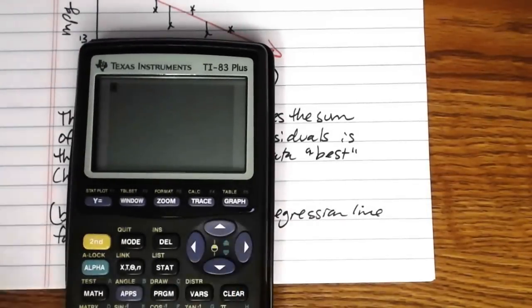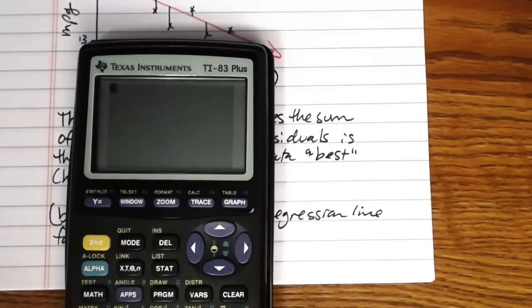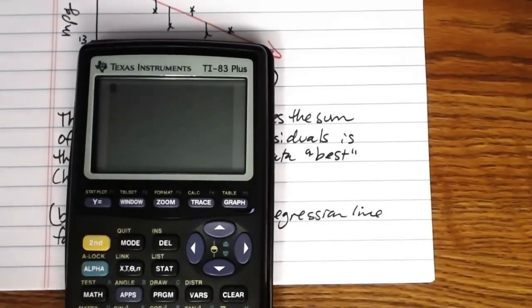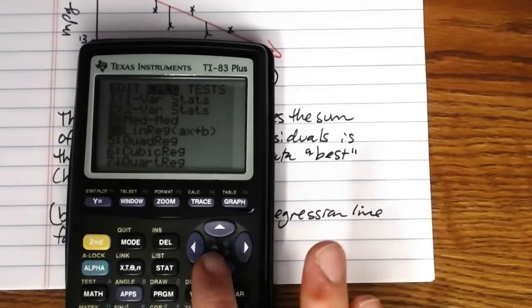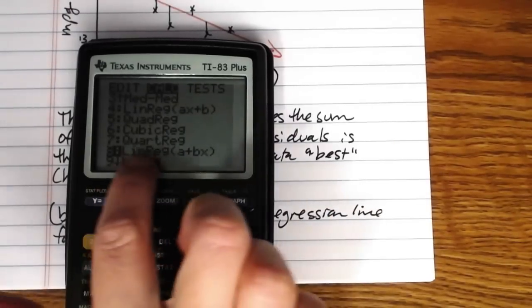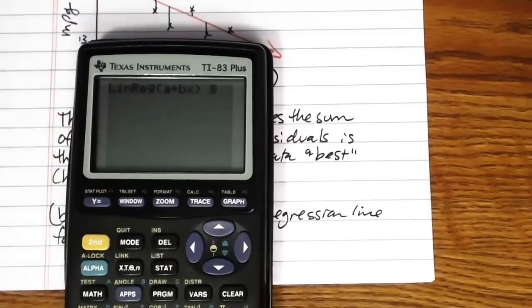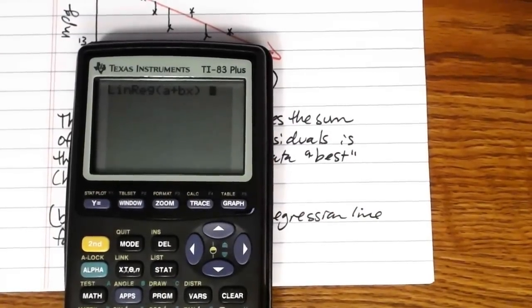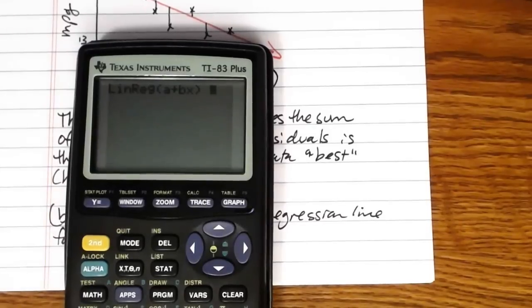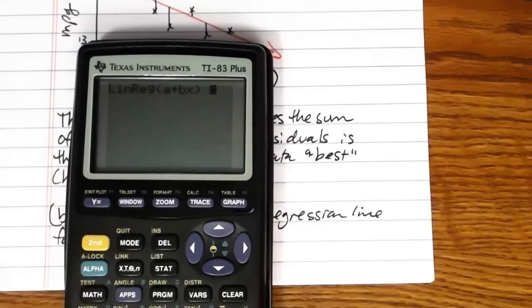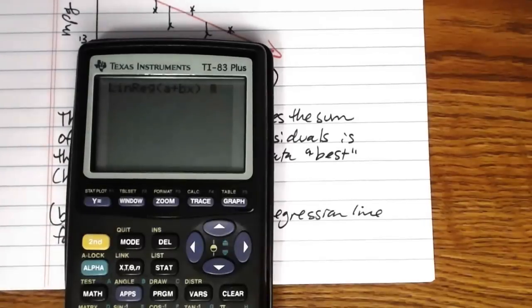So in the last video when we found the correlation coefficient r, we did something in the calculator called linreg, right. We went to stat and to calc and we went to option 8, linreg, here L-I-N-R-E-G a plus bx. That same thing that we used just to find r also finds the equation of the line of best fit. But I'll show you how to do one extra thing here that's really handy. Not only can we have the calculator find the equation for the line of best fit, but we can also have it graph the line of best fit on the scatter plot that we created just to see how nicely everything fits.